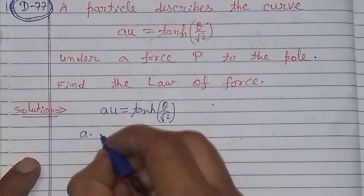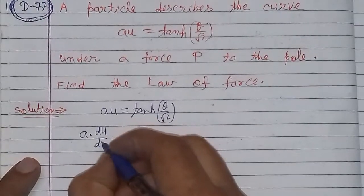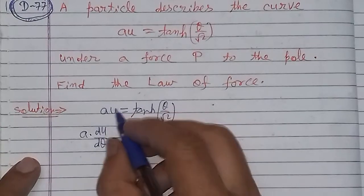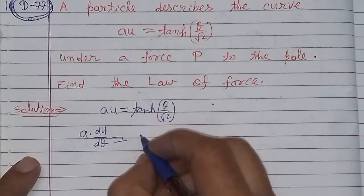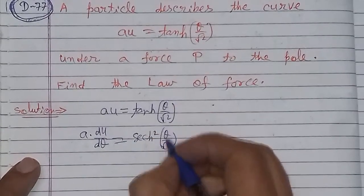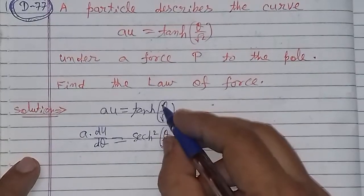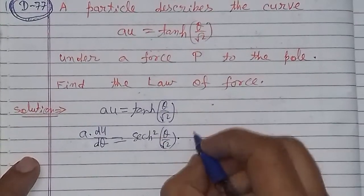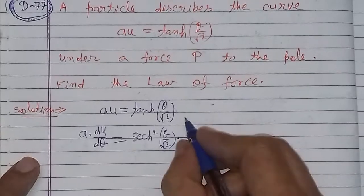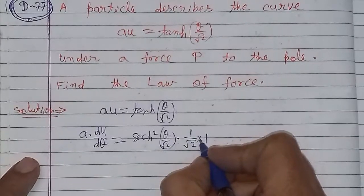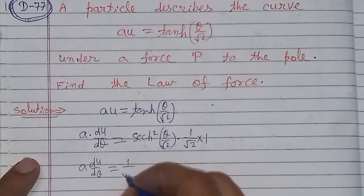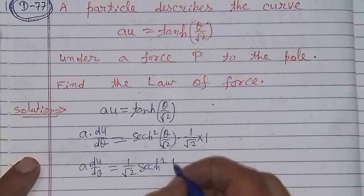Toh a into mein constant hai, se bahar le lenge. U ka differentiation theta ke respect mein du over d theta hota hai. Tan hyperbolic ka differentiation hum log jantay hain voh hota hai sec hyperbolic square theta by root 2. Lekin yahan par theta by root 2 hai, toh iska dobaara se differentiation karenge. Toh constant jo hai theta by root 2 mein, one upon root 2 bahar aa jayega. Toh du over d theta ki value hai: one by root 2 into sec hyperbolic square theta upon root 2.